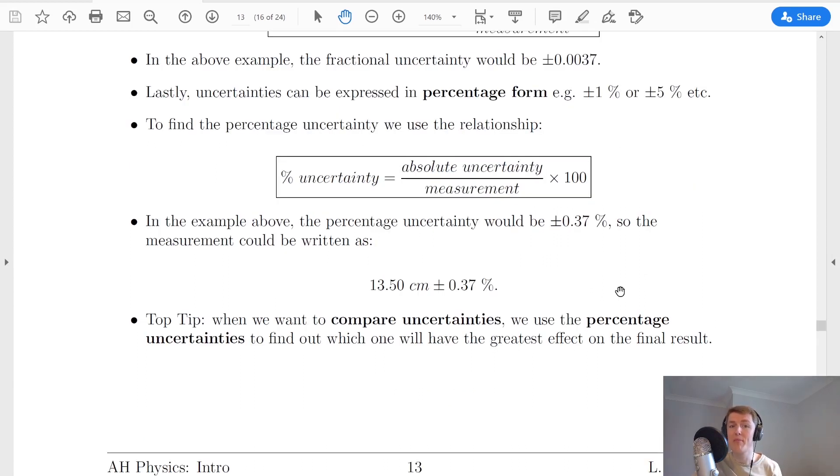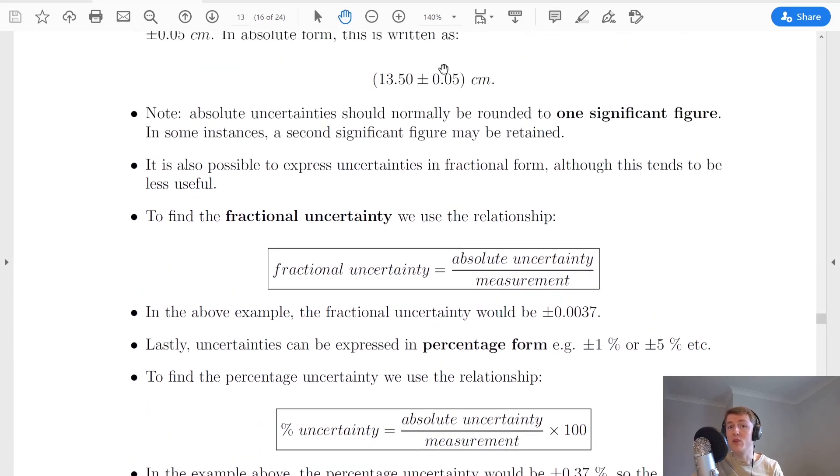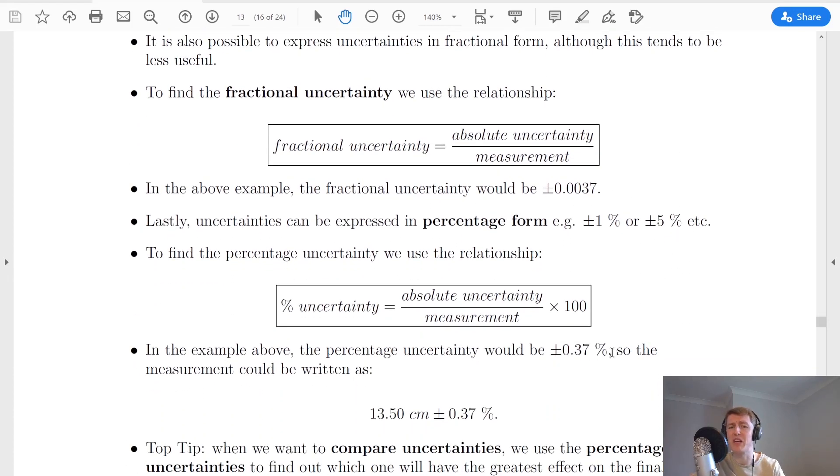If we go back to our example of measuring the pen with the ruler, the percentage uncertainty would be ±0.37%. You can check that by taking 0.05 divided by 13.50 and then times by 100. You should get about ±0.37%.